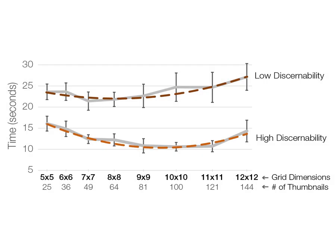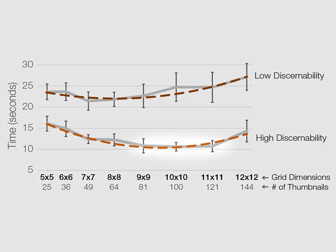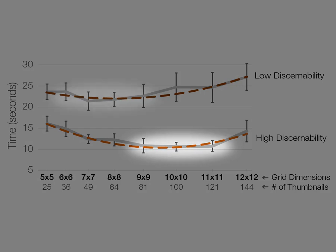For high discernibility target scenes — that is, scenes which are easy to recognize — larger grid sizes performed better. And for low discernibility target scenes, the smaller dimensions performed the best.